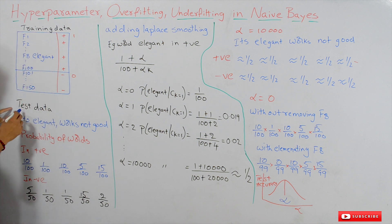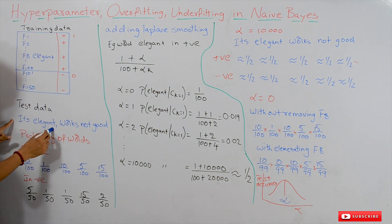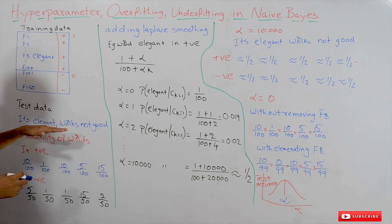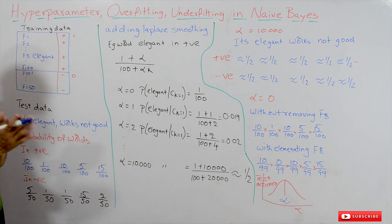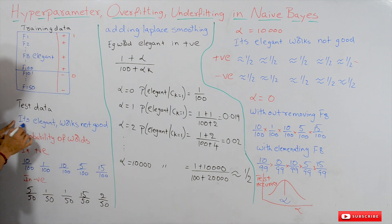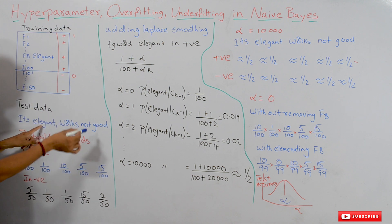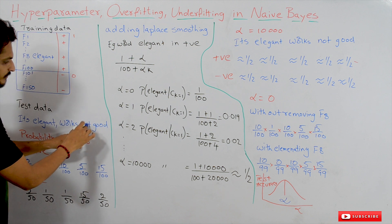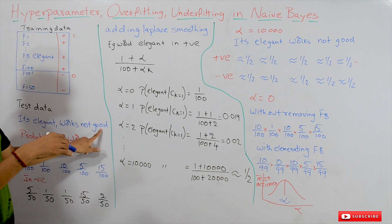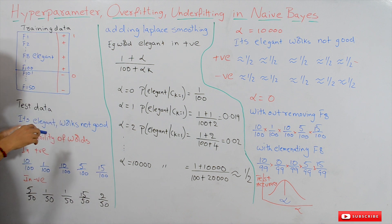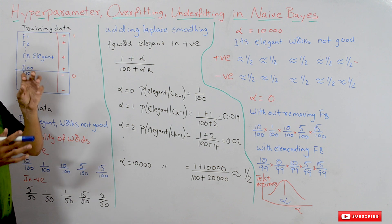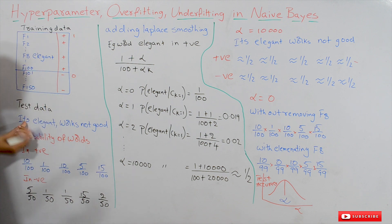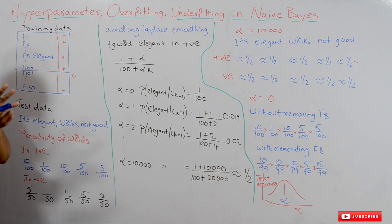The testing data which we are considering is: 'it's elegant, works, not good.' We already discussed how the Naive Bayes model works — it will identify the probability of these words in the testing data. It identifies the probability of each word in positive samples and in negative samples, then multiplies those probabilities. That's what the Naive Bayes model does.